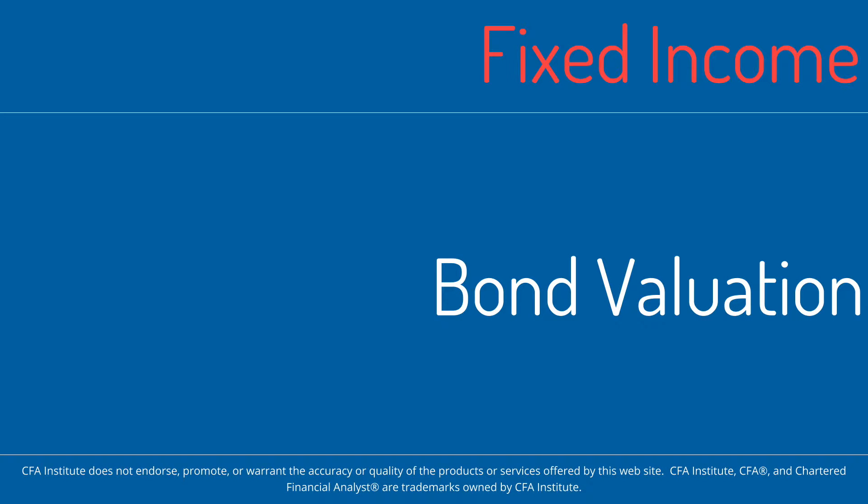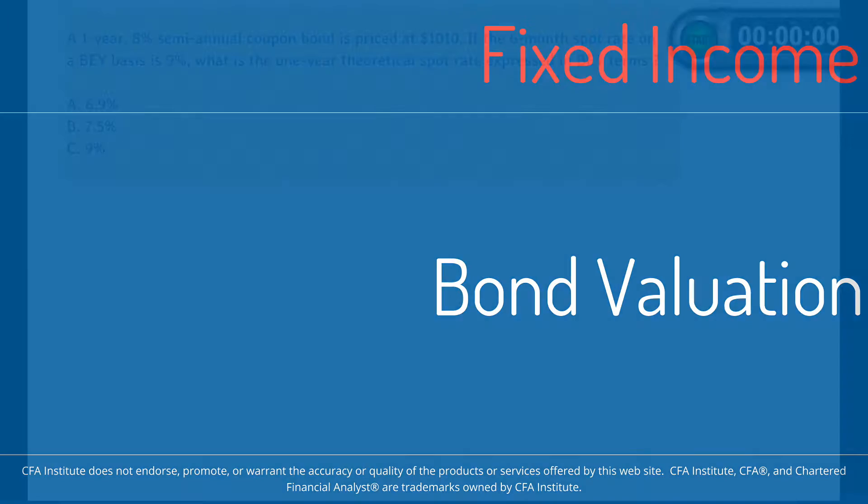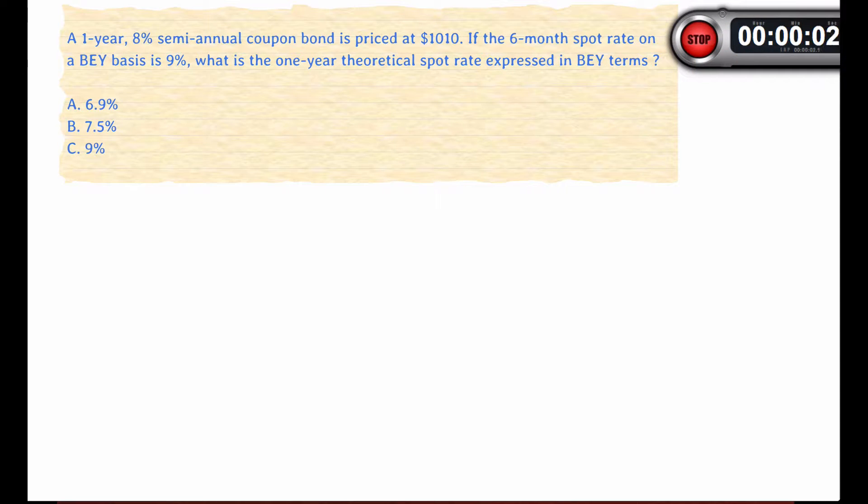Hello and welcome to this video session. Today we're going to look at two problems, both of which have to do with bond valuation. Here we're presented with a 1-year, 8% semi-annual coupon bond, which means there are two payments of $40. It's priced at $1010, and the discount rate is expressed in bond equivalent yield terms as 9%, so the 6-month implied rate is 4.5%. We're being asked: what is the one-year theoretical spot rate expressed in BEY terms?